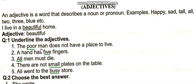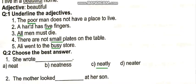Underline the adjectives in these sentences. 'The poor man does not have a place to live.' Poor is an adjective. 'A hand has five fingers.' Five is an adjective. 'All men must die.' All is an adjective. 'There are not small players on the table.' Small is an adjective. 'Ali went to the busy store.' Busy is an adjective.